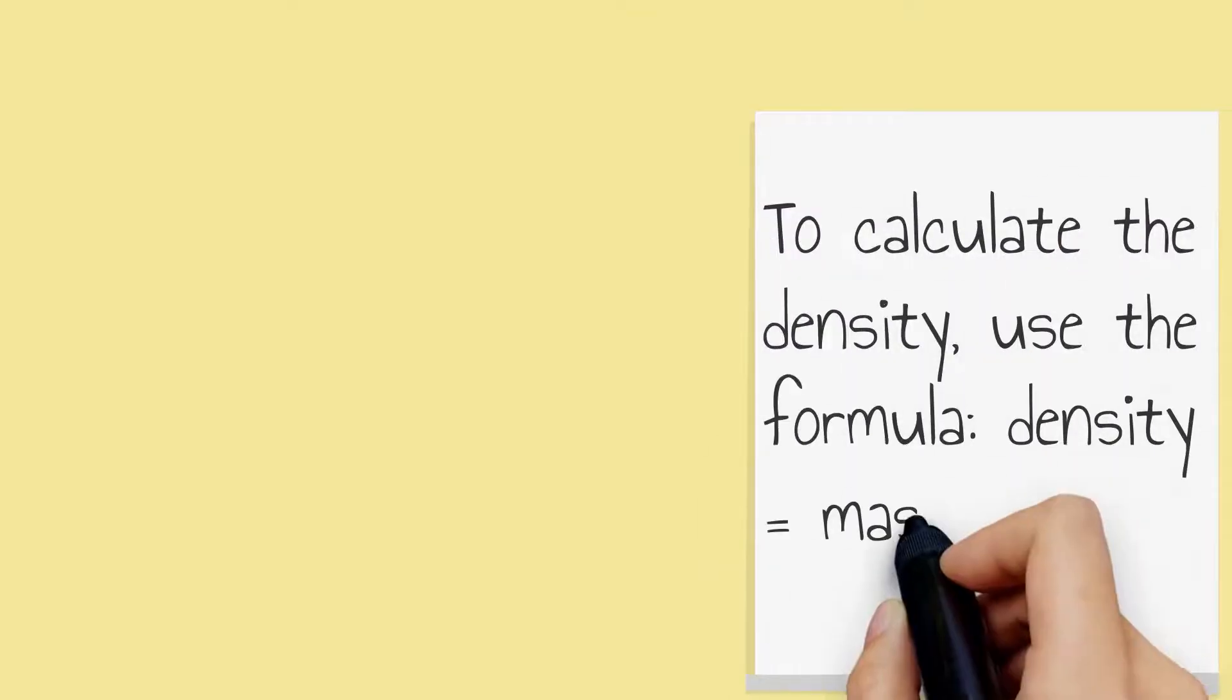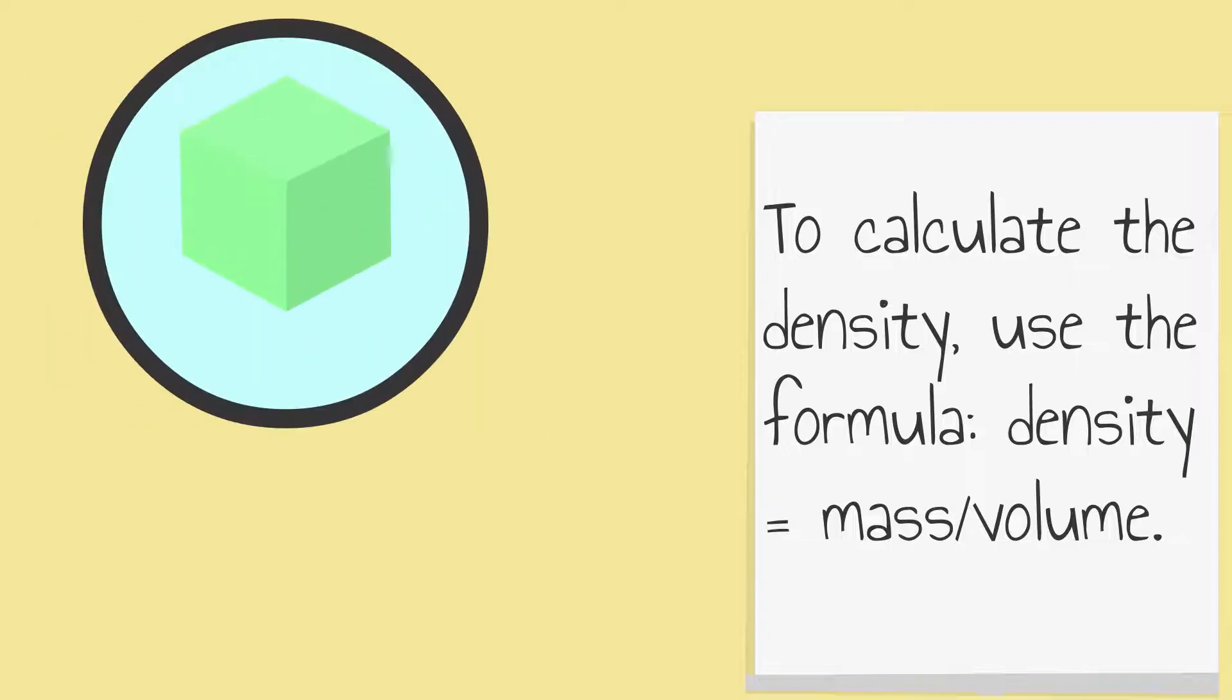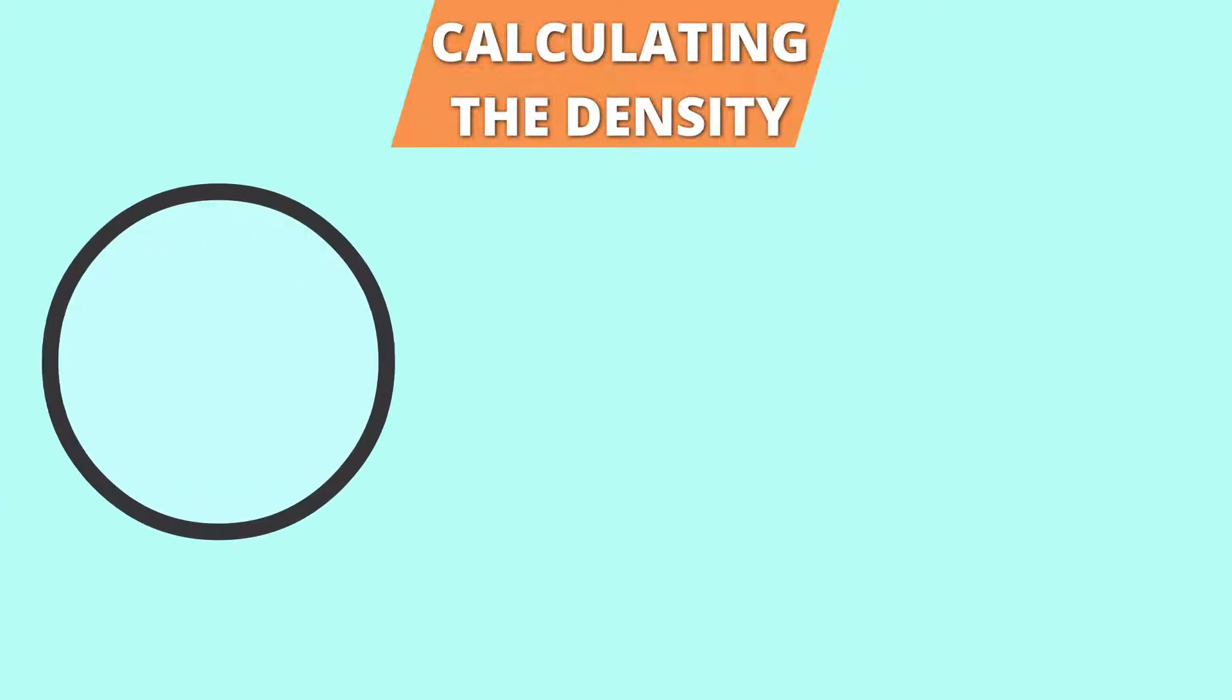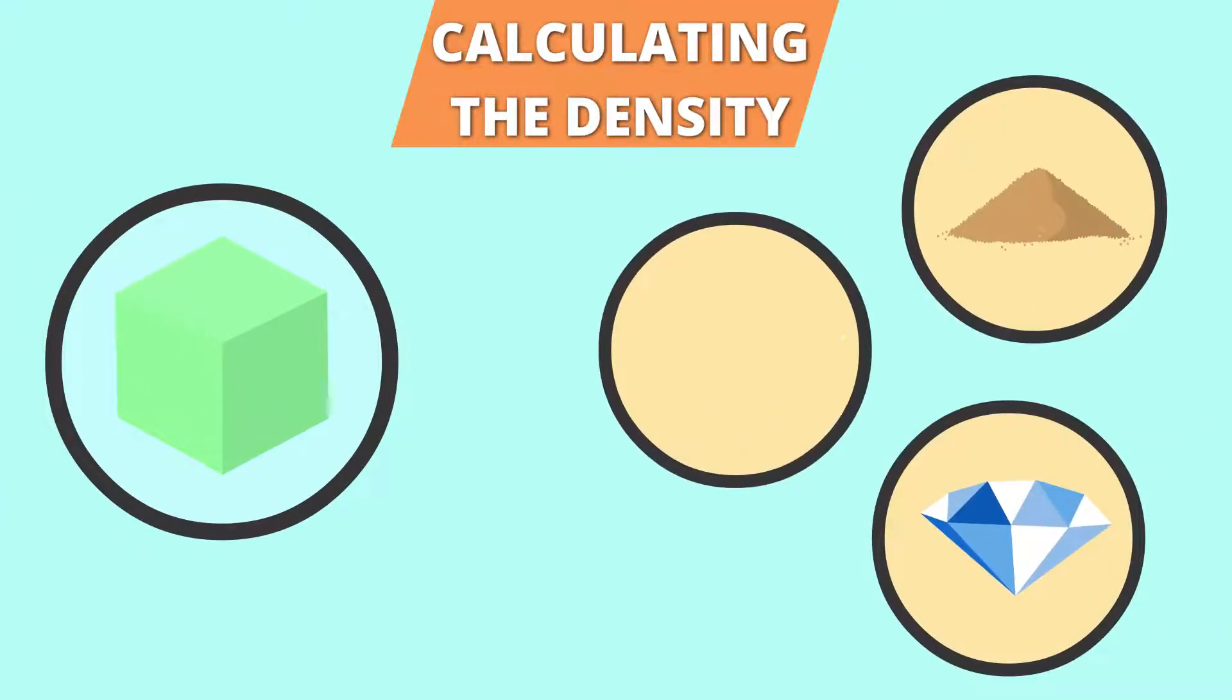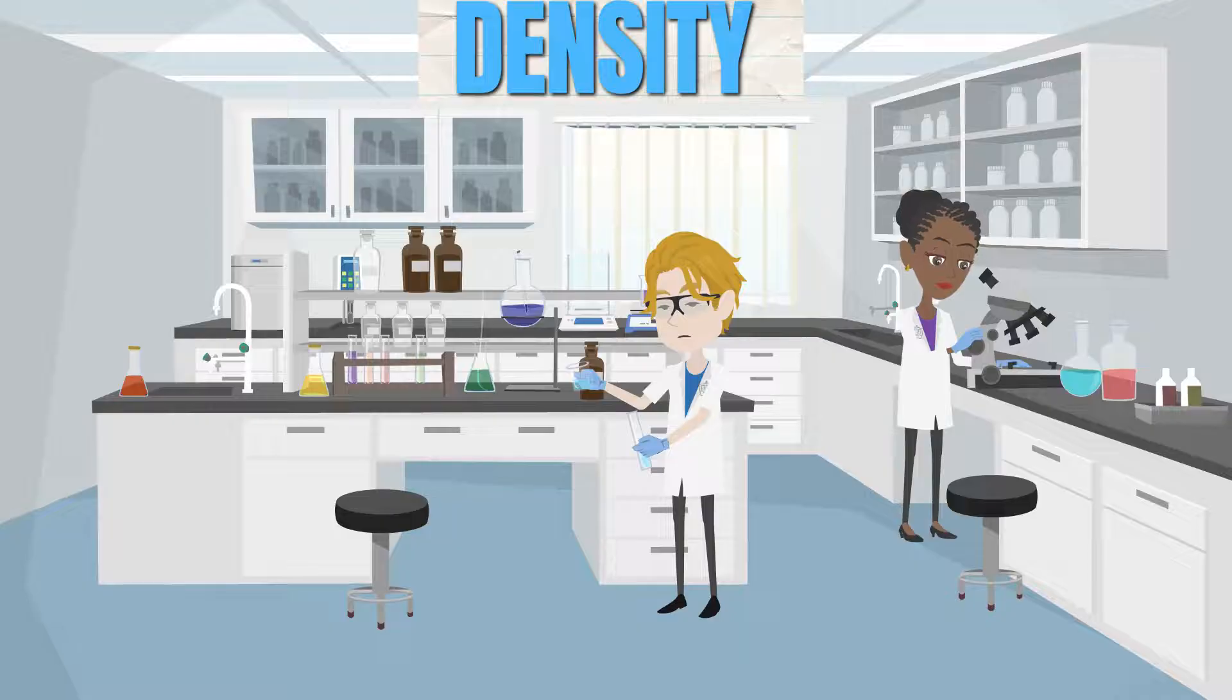To calculate the density, use the formula density equals mass over volume. So if the mass of the sample is 10 grams and the volume is 5 centimeters cubed, the density would be 10 divided by 5 equals 2 grams per centimeters cubed. Finally, compare your calculated density to the known densities of common substances to try and identify the unknown substance. By following these steps, you can easily calculate the density of an unknown substance and use information to identify it.